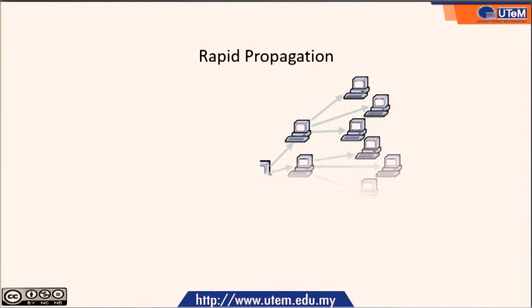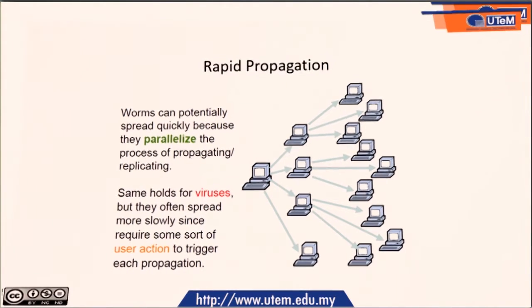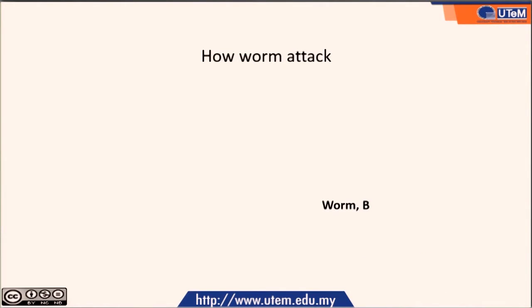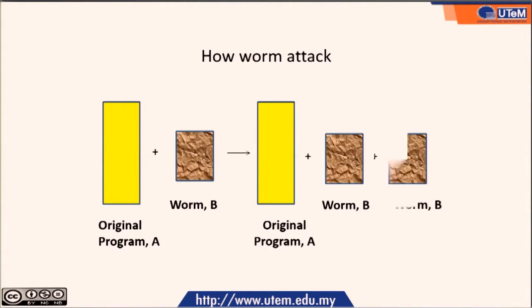A rapid-propagation worm can spread quickly because it parallelizes the process of propagating and replicating. The same holds for viruses, but viruses often spread more slowly since they require some sort of user action to trigger each propagation. A worm can infect other hosts automatically without any user interaction. A worm can infect an original program, and when that program moves to another host, the worm replicates and infects the new host.